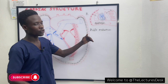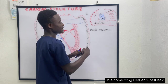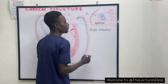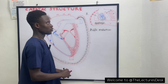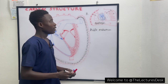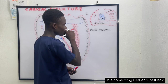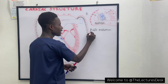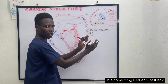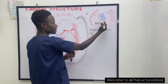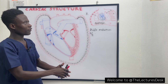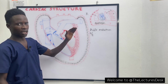The heart extends from the second rib and ends at the fifth intercostal space. Basically, the base starts from the second rib and the apex ends at the fifth intercostal space. Two-thirds of the heart has been shifted to the left side of the midline plane of the thorax. That is the general concept of the heart — where it is located.